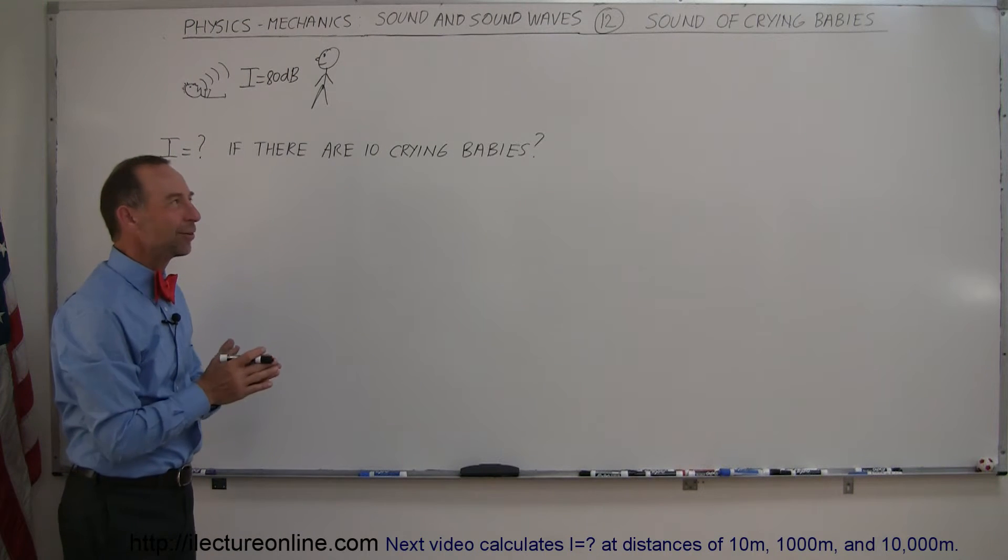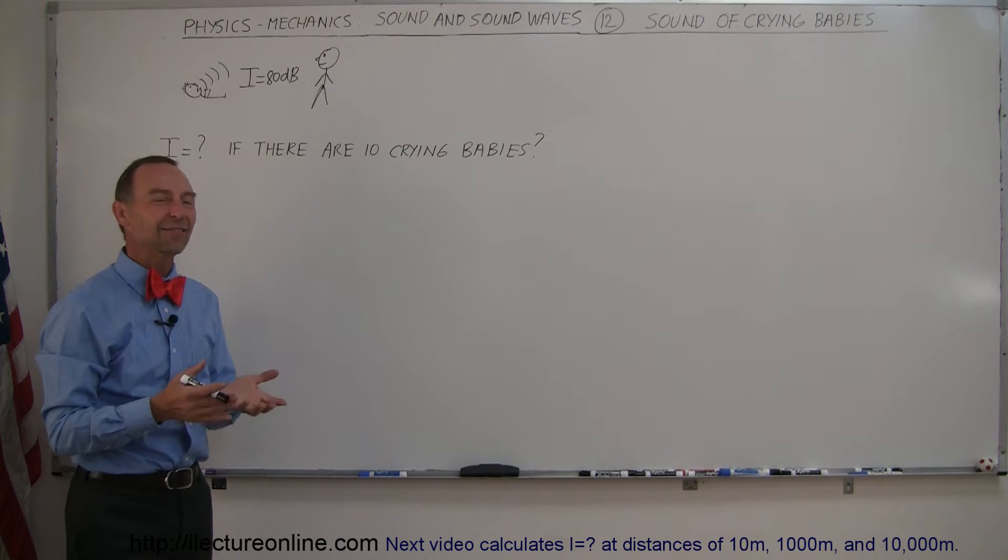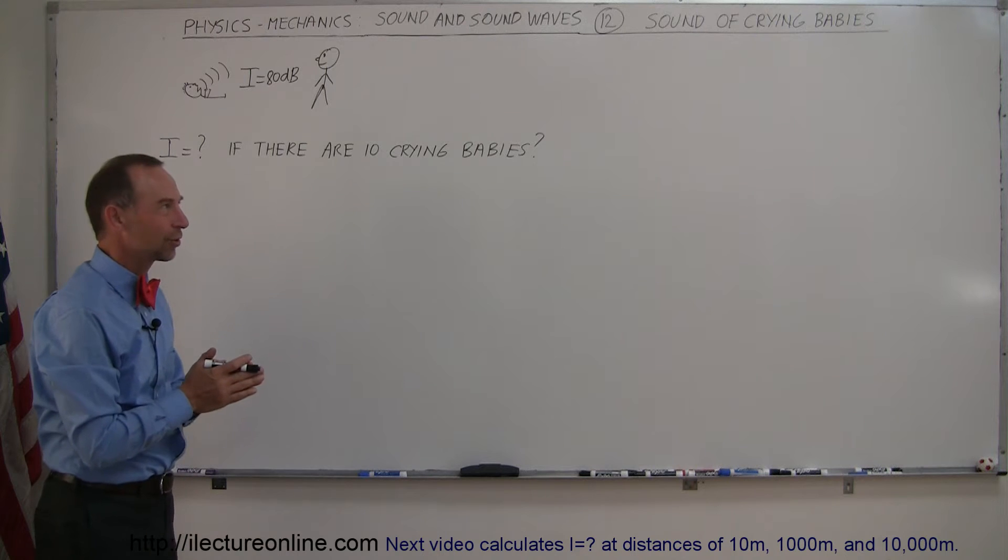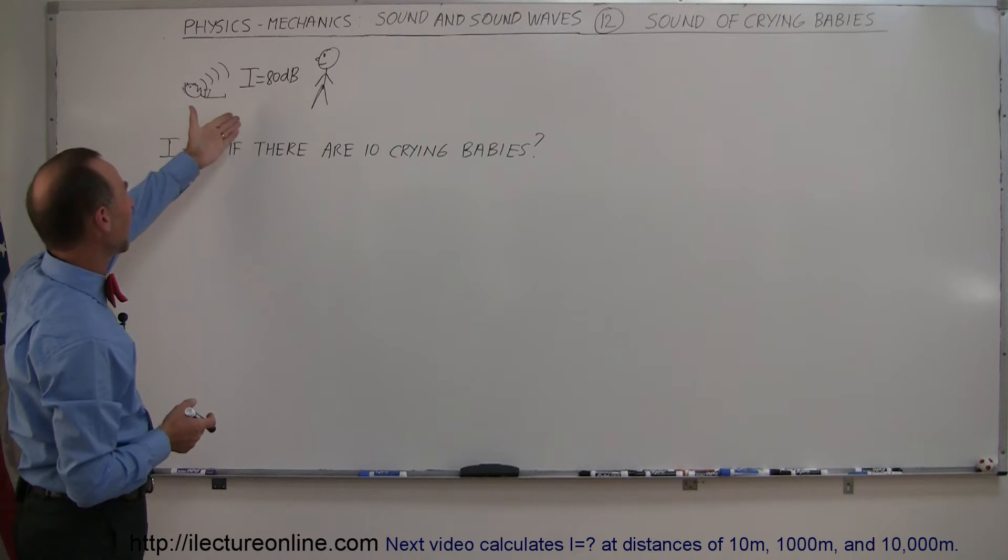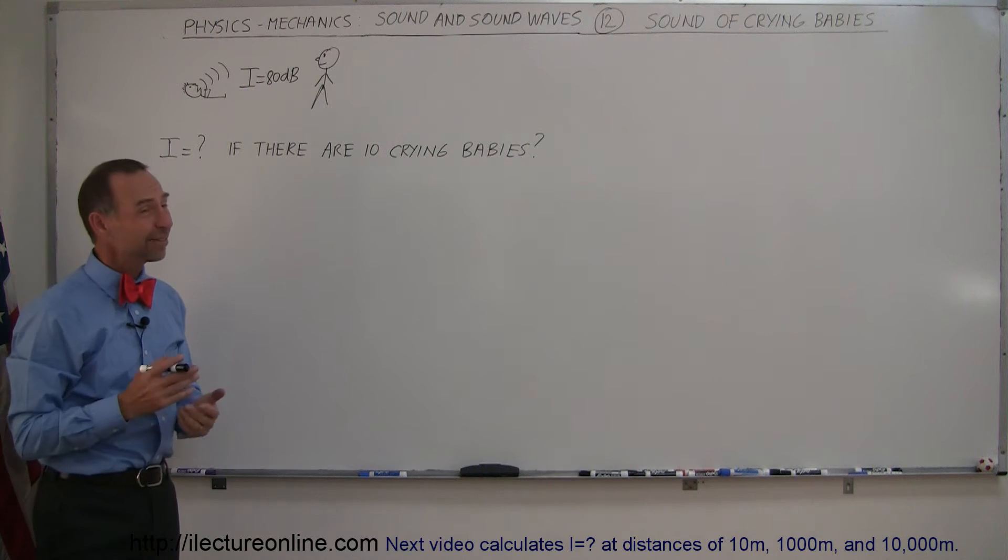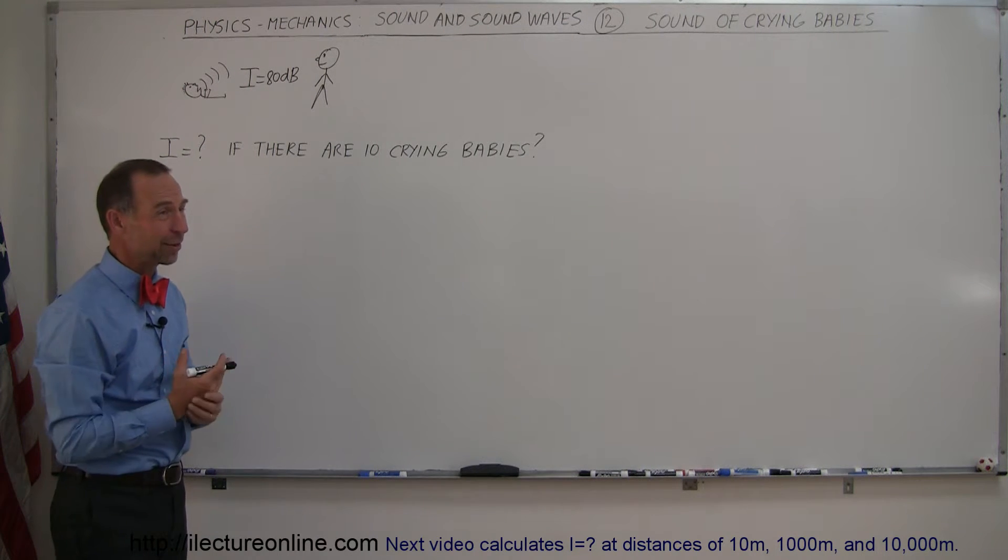Another way to get a better understanding of how sound intensity works and the decibel scale works is to look at a crying baby. A typical crying baby will put out about 80 decibels of sound. That's pretty loud, so most people will hear a crying baby.